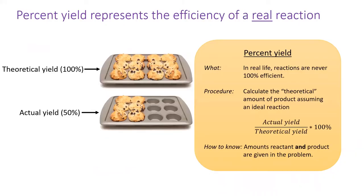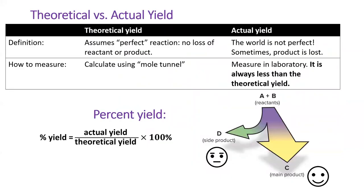Moving on to percent yield. Remember, you can spot a percent yield problem because amounts of reactant and product are both given in the problem. Percent yields are only calculated after a reaction has been performed in real life.